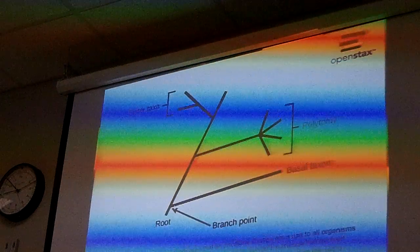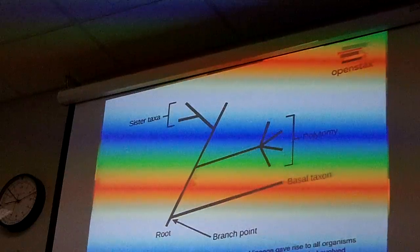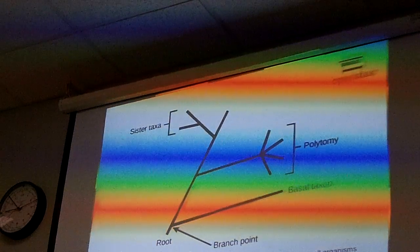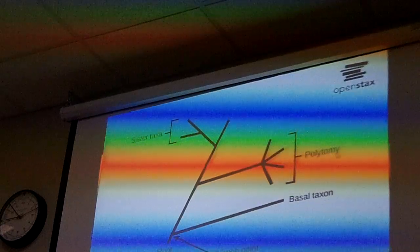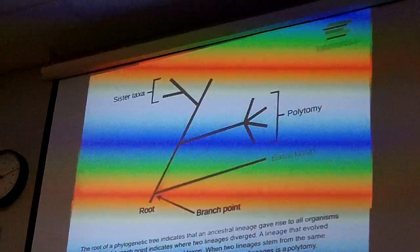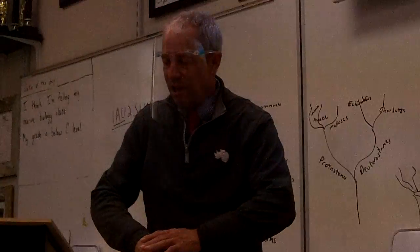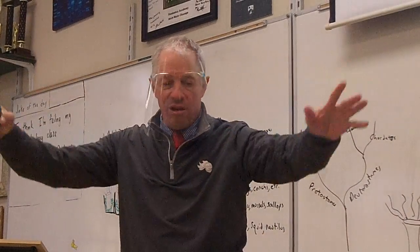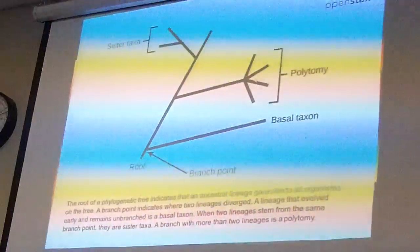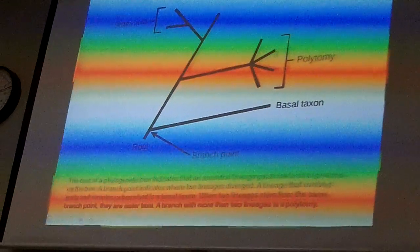A branch point is a speciation event where one species becomes two. Where you see a polytomy — multiple branches coming off the same point — that usually means scientists aren't sure what branched off first and what branched off second, so they put them all together. Often scientists don't know the exact relationships.